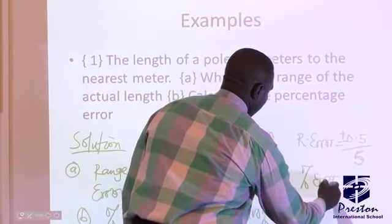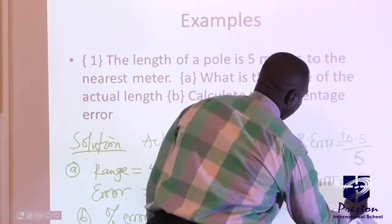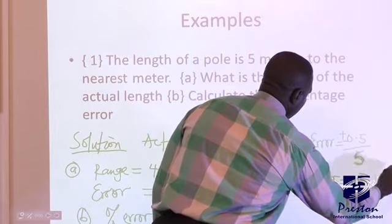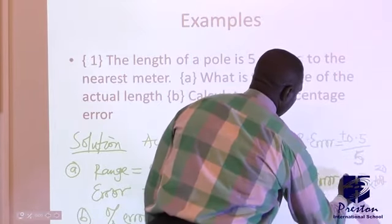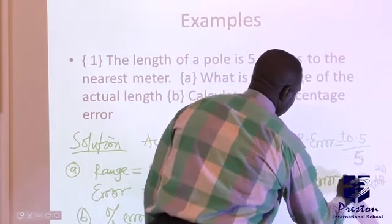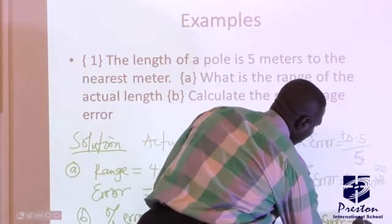Percentage error can now be 0.5 over 5 times 100. 5 here 1, 5 here 20. And 20 times 0.5, your percentage error is 10%.